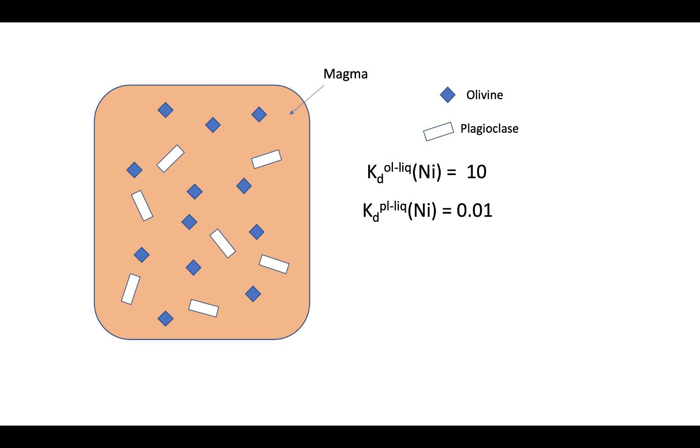Now let's take a look at the example of nickel. In the previous lecture, we talked about nickel being compatible in olivine and incompatible in plagioclase. If we have nickel that is being absorbed by olivine, but it's being rejected by plagioclase, what is the net effect when we have these two minerals crystallizing together? And that's what the bulk distribution coefficient's going to do.